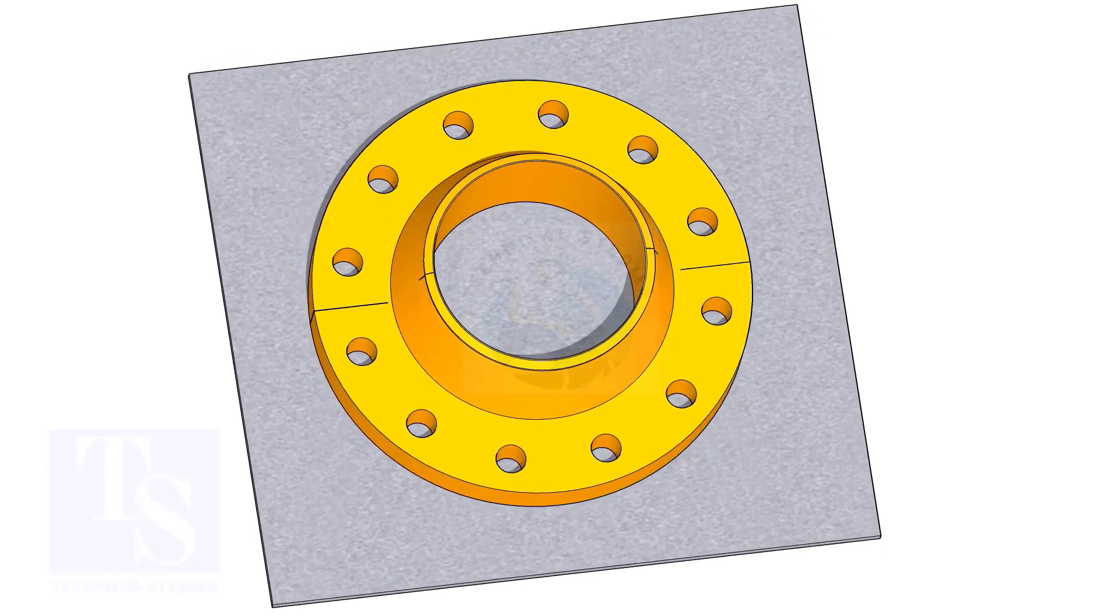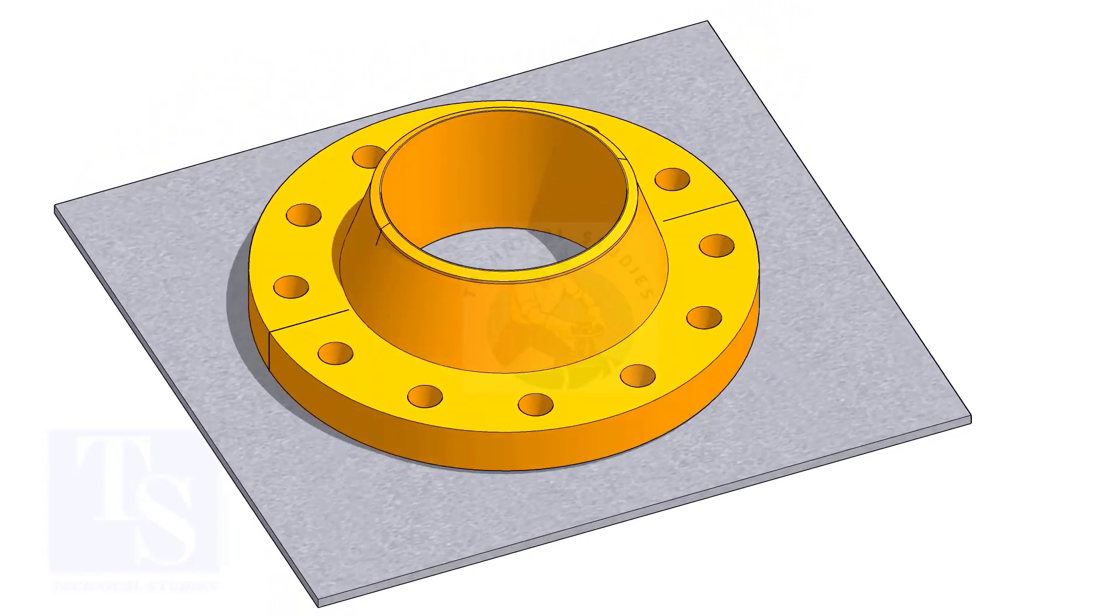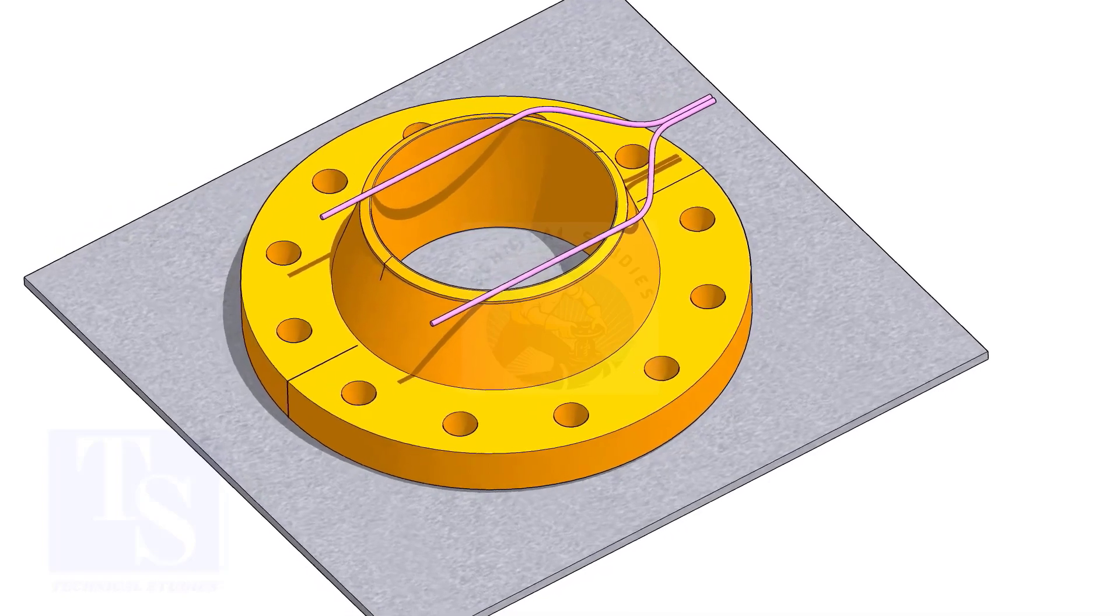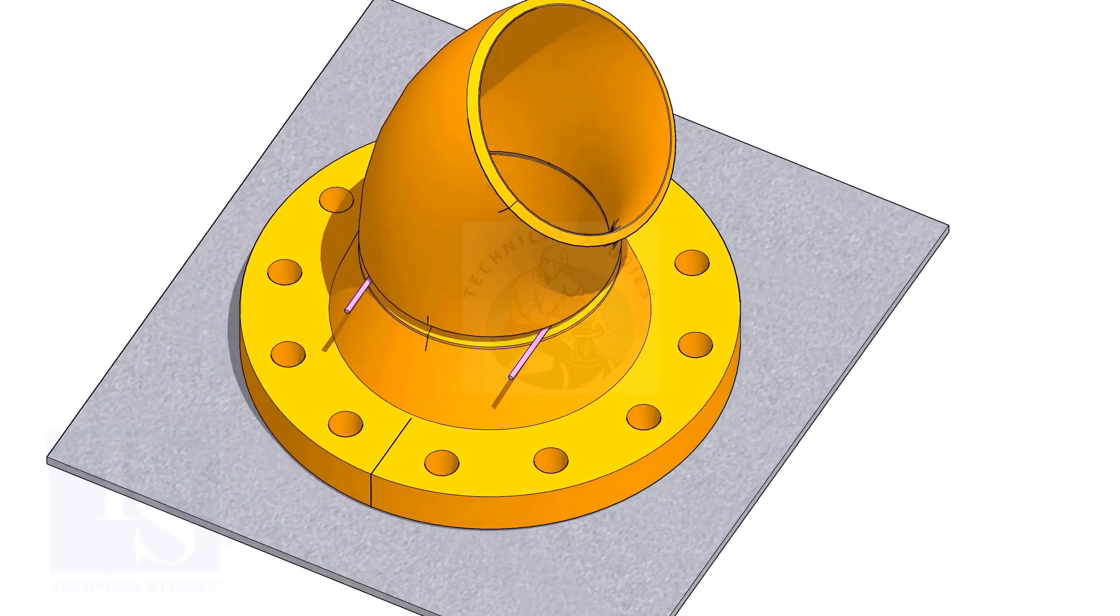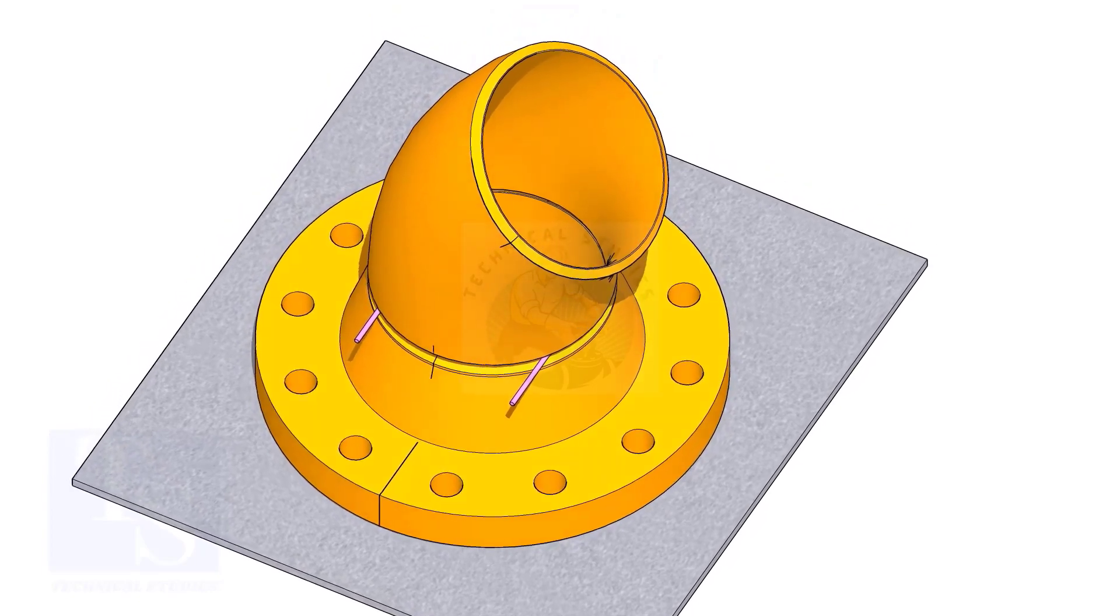Put the flange on a straight plate. Put the gap rod and the elbow on it. Match the center lines of the elbow and the flange.